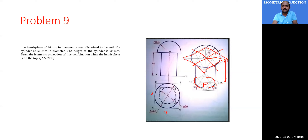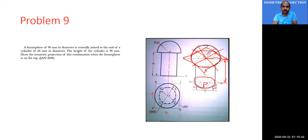You get the isometric projection of the top surface of the hemisphere. Now using the four centers, note that the radius used here is the original radius, which equals 45, to draw the isometric projection of the top surface of the hemisphere.